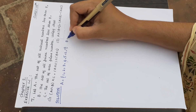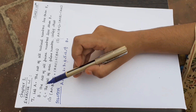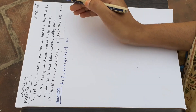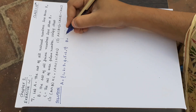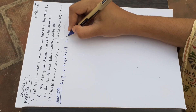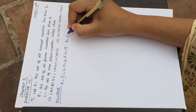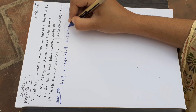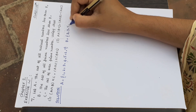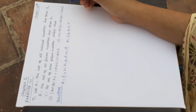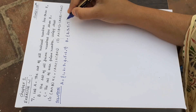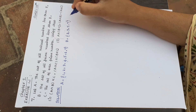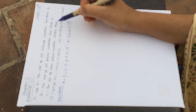Now B. B is equal to the set of all prime numbers less than 8. So the prime numbers are 2, 3, 5, 7. So B = {2, 3, 5, 7}.